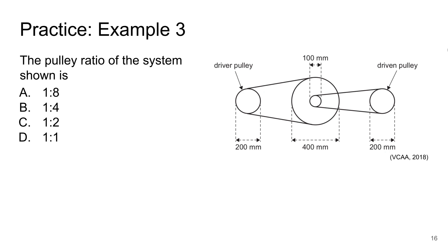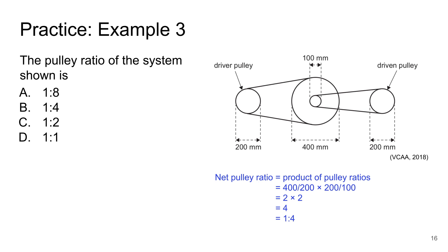In practice example 3, we have compound pulleys in the belt drive system. The net pulley ratio is the product of the pulley ratios: the first is 400 millimeters divided by 200, and that is multiplied by 200 millimeters divided by 100 millimeters, giving 2 times 2 equals 4. Therefore the ratio is 1 to 4, and the answer is B.